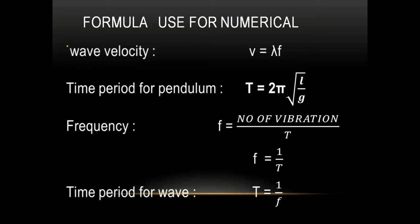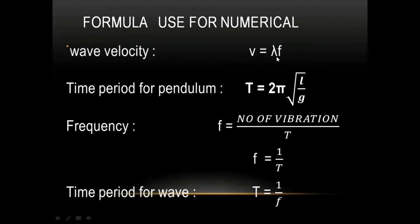Now, the formulas used for numericals. The first formula is wave velocity: v = λf, where v stands for velocity of the wave, λ (lambda) stands for wavelength, and f stands for frequency. Remember this formula: wave velocity v equals lambda times f.